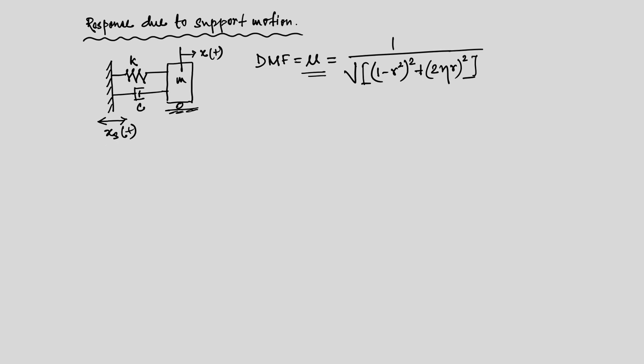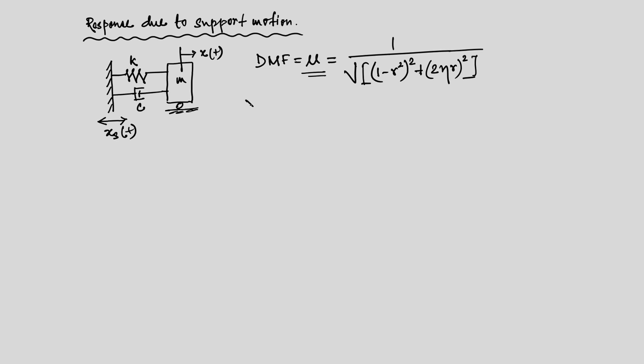There are different examples of this type of problem. For example, if you have a building and it experiences support motion like an earthquake. So let us investigate: we have x of t and x_s of t, where the subscript s stands for support motion. This displacement is given by x_naught sin(lambda t). Our task is to find out the response quantity x of t.